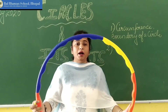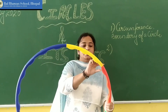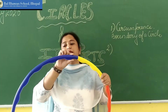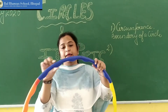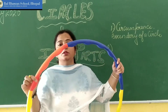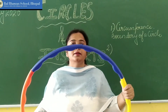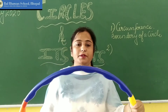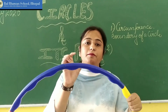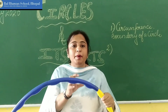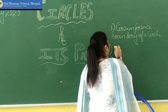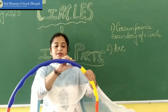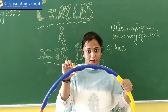Our second part of a circle. Can you see these colourful parts? This is yellow, this is blue, again this is blue, and this is orange. These parts are known as the arc of a circle. The part of a circumference, or any part of a circle, is called the arc. This is the arc of a circle.